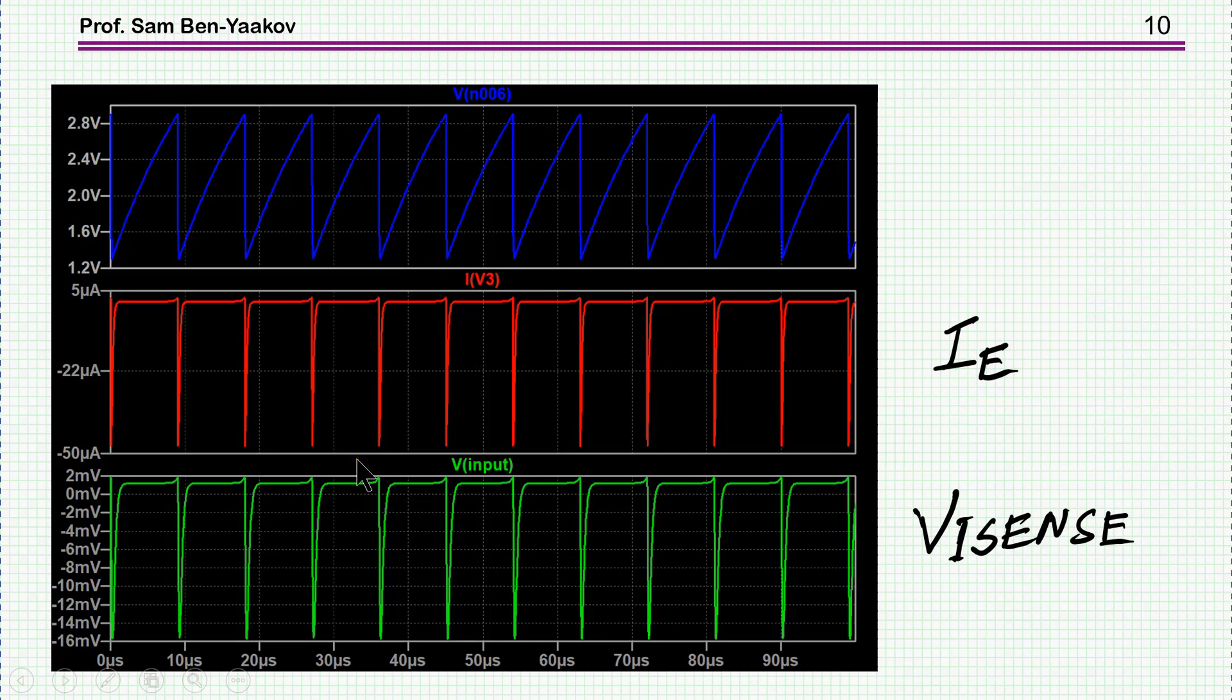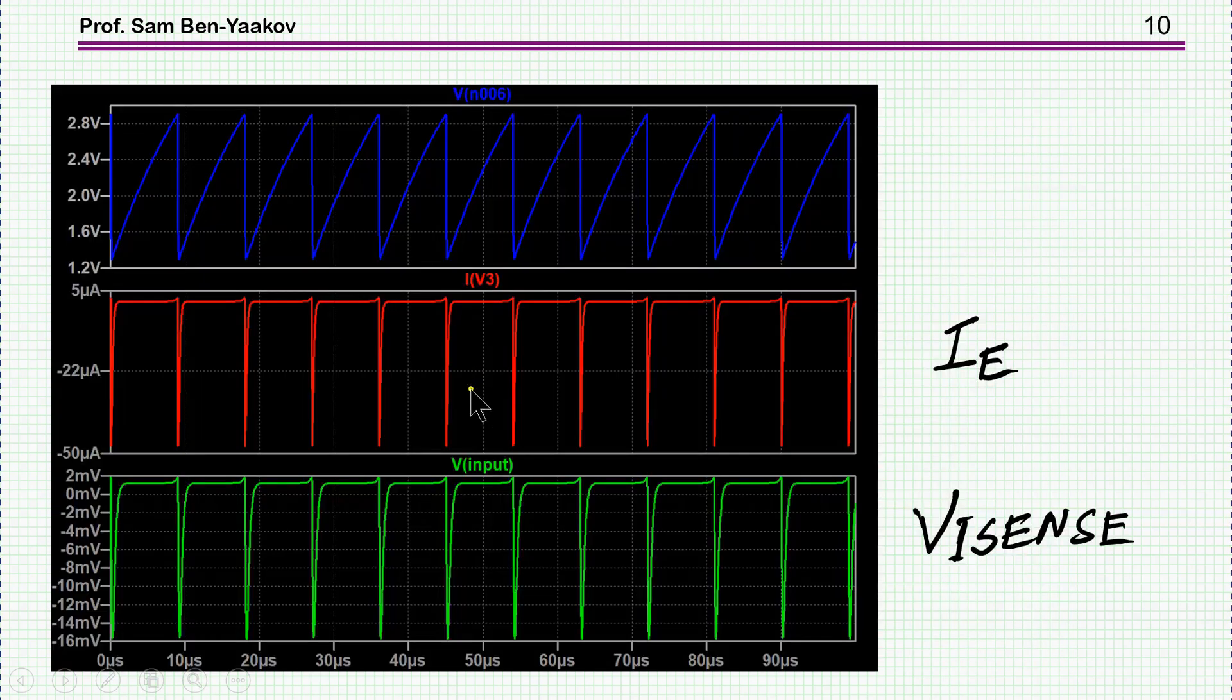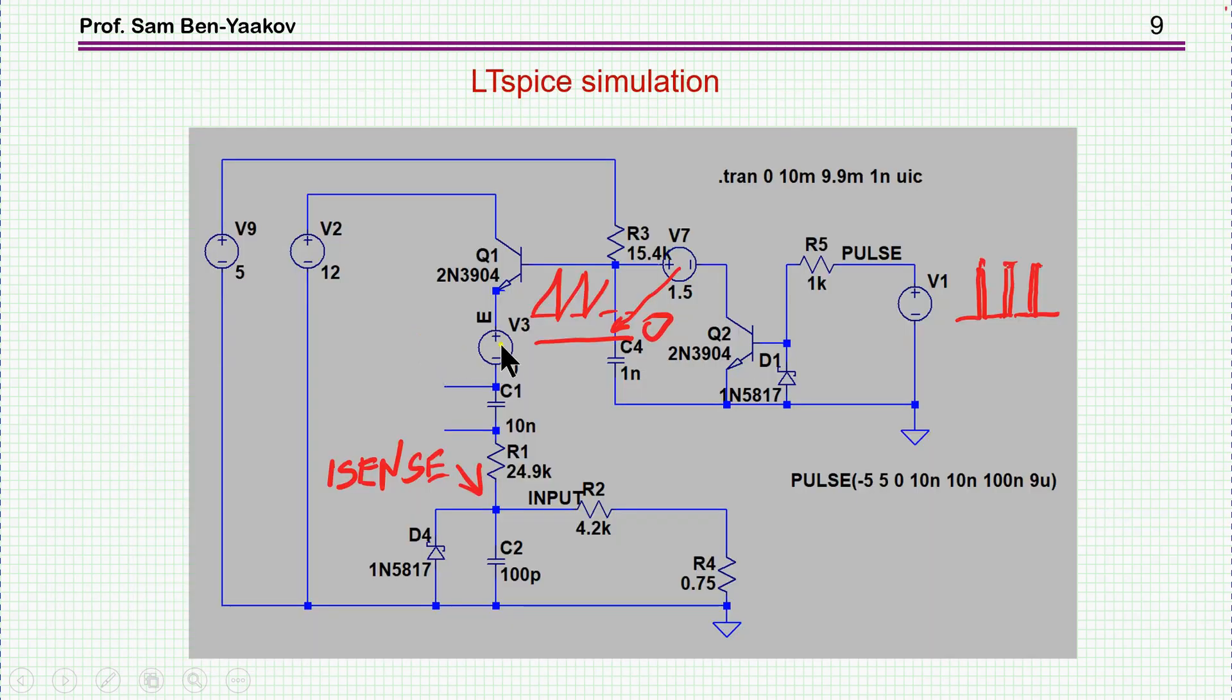This is the result of the simulation. We see the triangular waveform very nicely, it's about 2.7 volts. Here we have this current that I've mentioned—these are small currents, microamps. This is due to this transition, we see the current. This is the current through this voltage source, which is the emitter current. So we see these currents which are coming through this capacitance to the input.